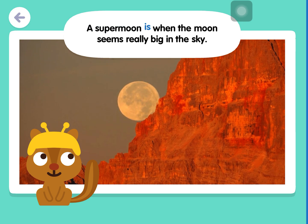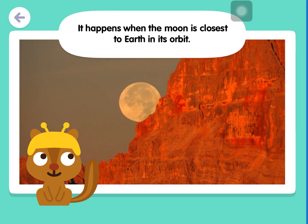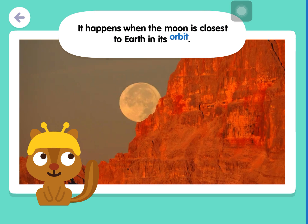A supermoon is when the moon seems really big in the sky. It happens when the moon is closest to Earth in its orbit.